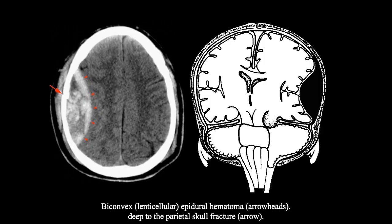Here is another case of a patient who has an obvious bone fracture, shown by the red arrow. The concave appearance is almost like a ball protruding out, and there is also mild intracranial shifting.